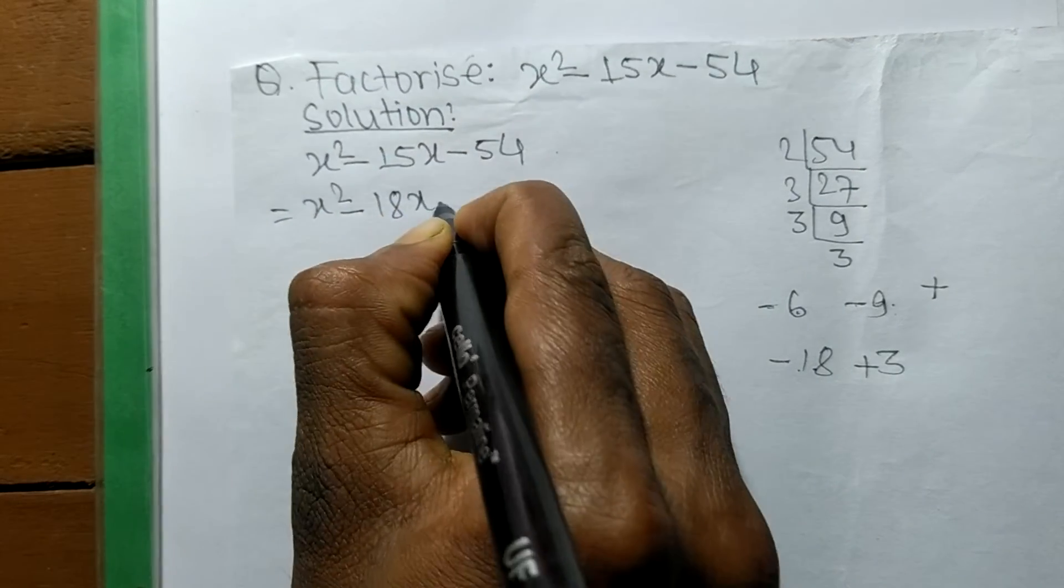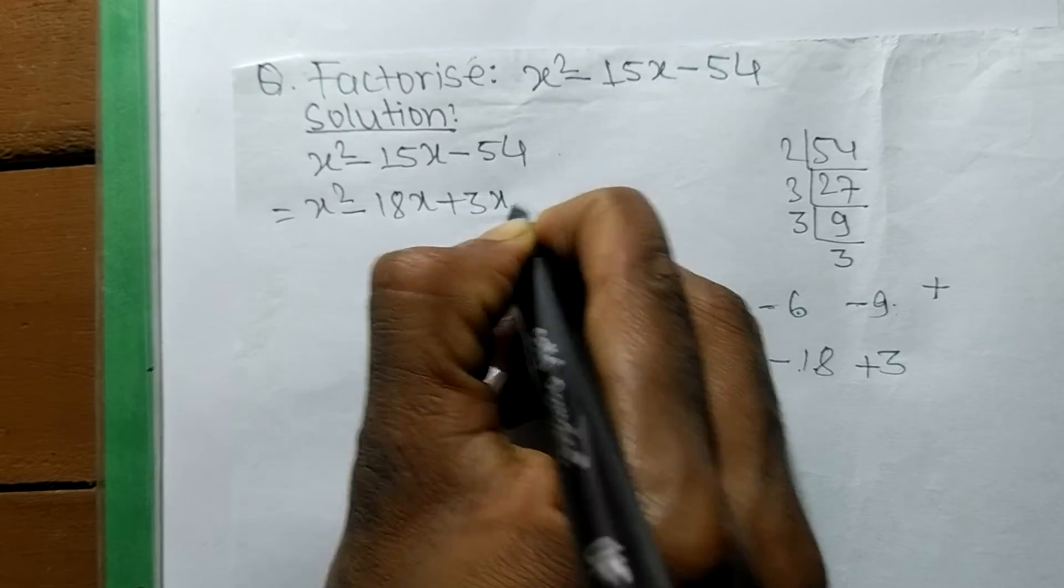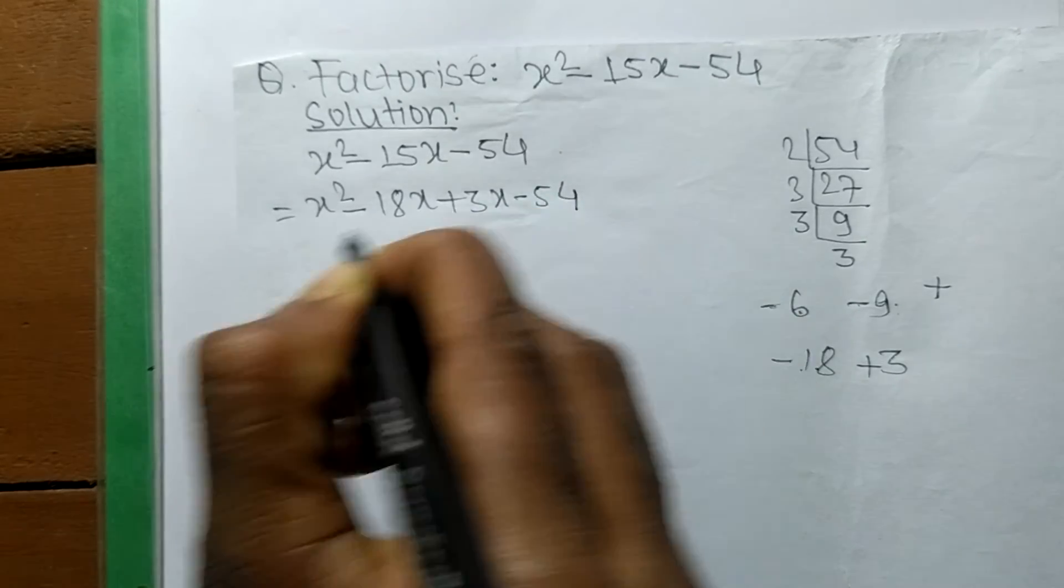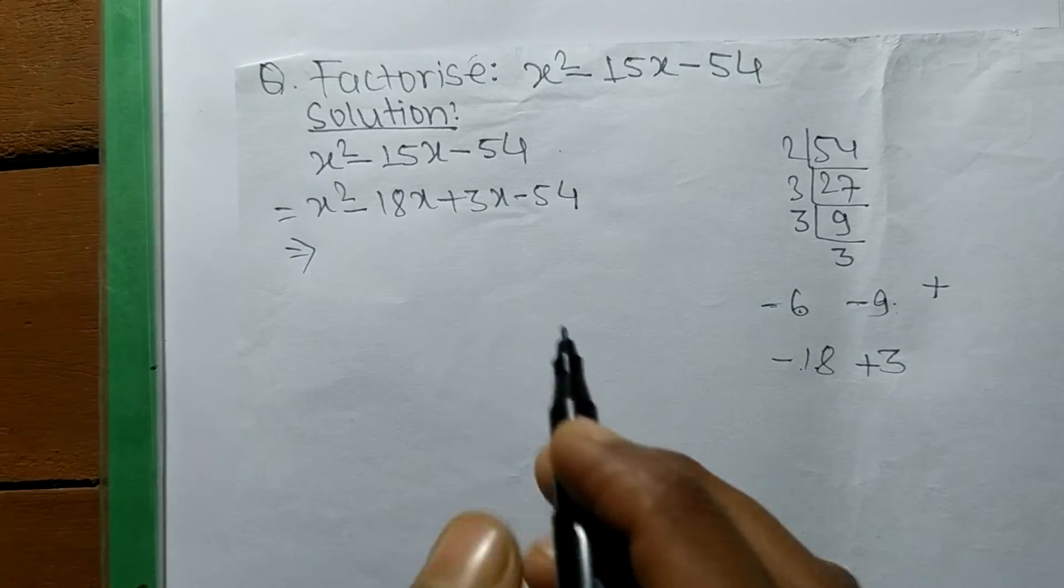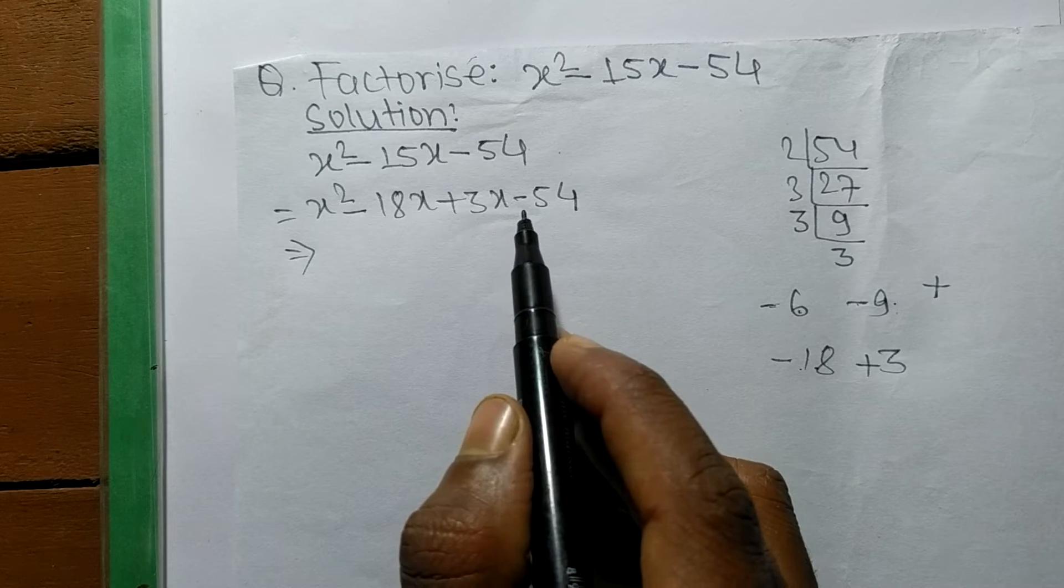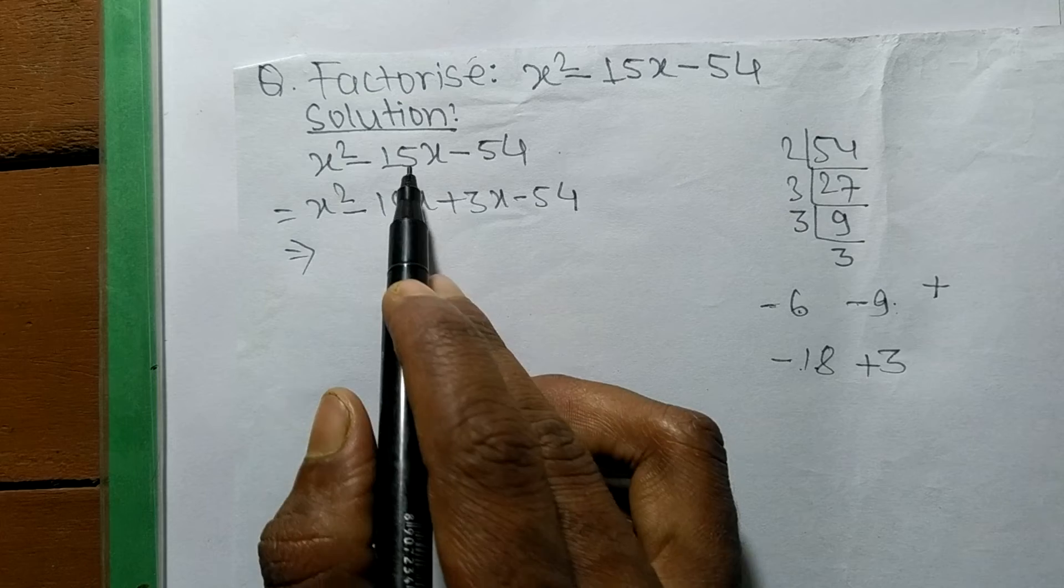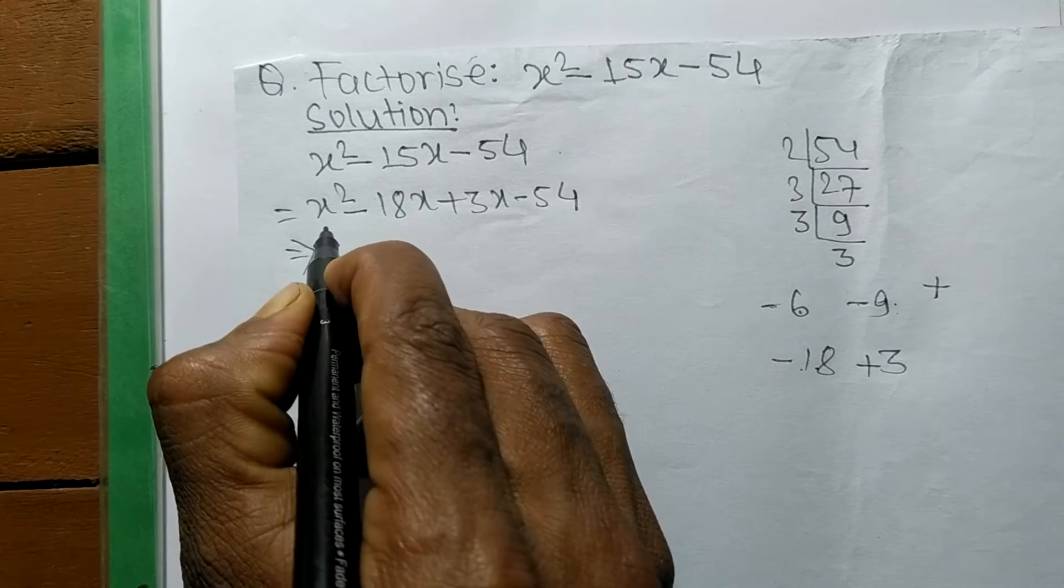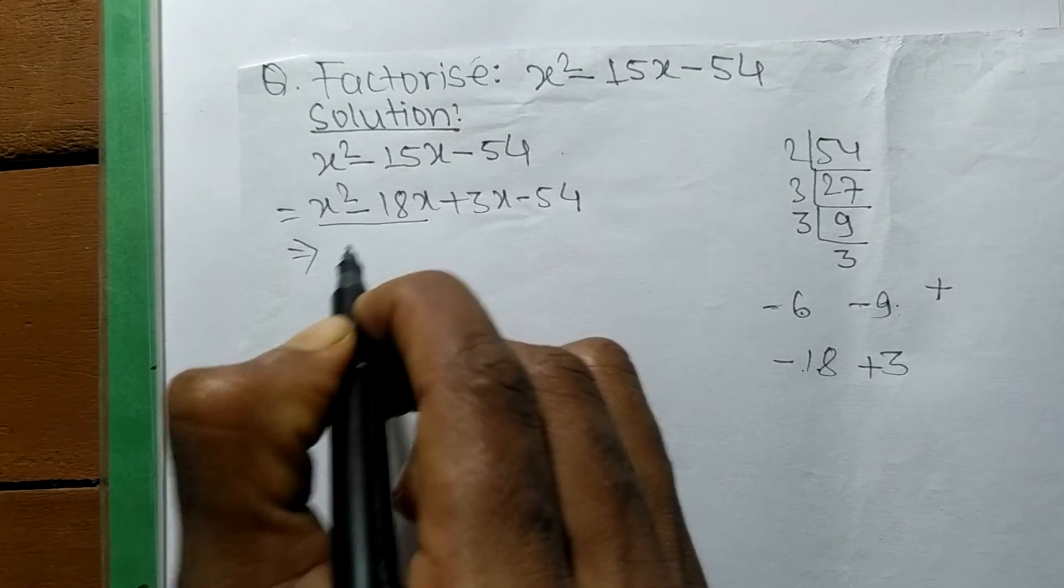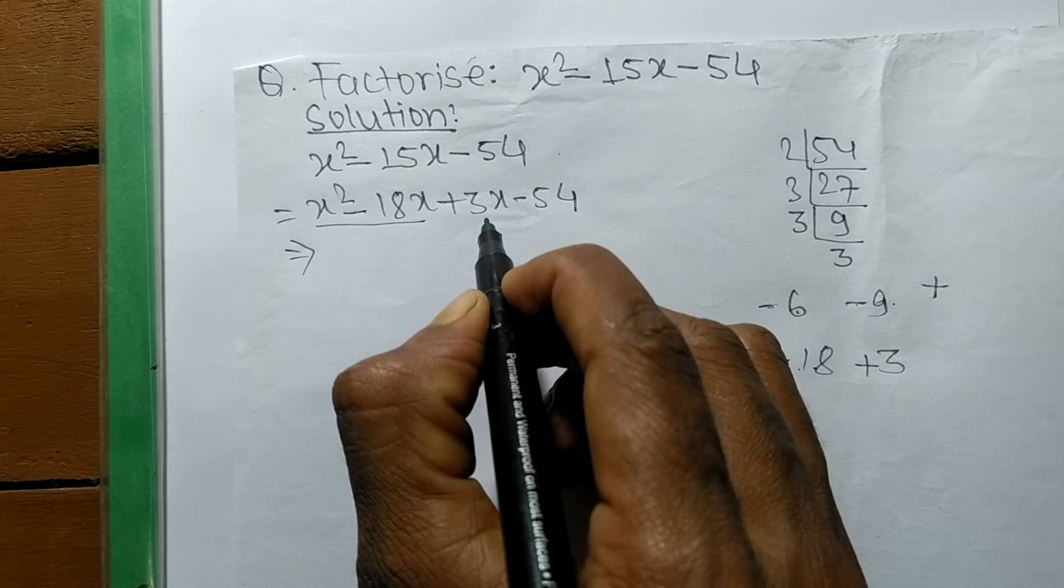Now we separate this into 2 pairs. -18 plus 3 equals -15x. The first pair is x² - 18x, and the second is 3x - 54.